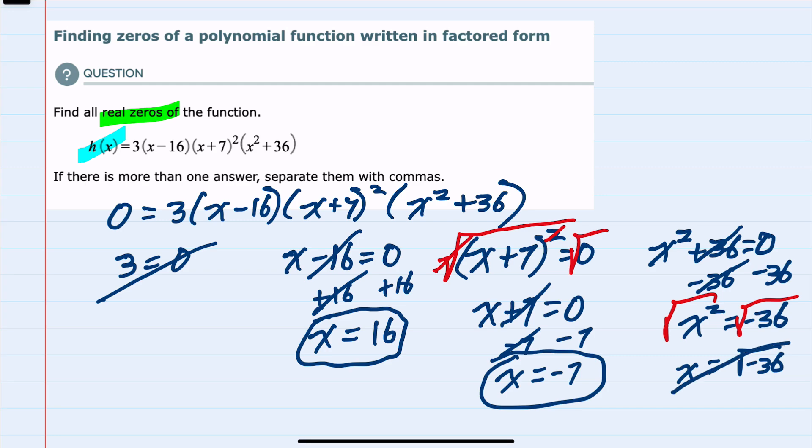Since that doesn't return any real solutions, my two solutions here are 16 and -7. We're asked to list them separated by commas, so our solutions are -7 and 16.